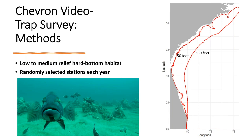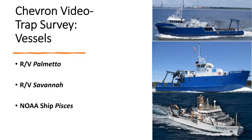We currently cover an area from Cape Hatteras, North Carolina, in the north to St. Lucie Inlet in Florida to the south, at depths from 50 feet out to 360 feet. The video traps are deployed on low-to-medium relief hard-bottom habitat randomly selected from a universe of about 4,300 mapped stations. The survey takes place between April and October every year, with traps deployed during daylight hours. We currently have three vessels in use: the R/V Palmetto based in Charleston, the R/V Savannah based in Savannah, Georgia, and the NOAA ship Pisces.